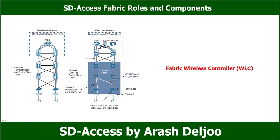In traditional wireless deployment, the WLC is centralized and all control plane and data plane wireless traffic is tunneled to the WLC through CAPWAP tunnels. In SD Access, the wireless control plane remains centralized, but the data plane is distributed — using VXLAN directly from the fabric-enabled APs. This figure illustrates a traditional wireless topology compared to an SD Access wireless deployment: fabric APs establish a VXLAN tunnel to the fabric edge to transport wireless client data instead of using CAPWAP data tunnels.